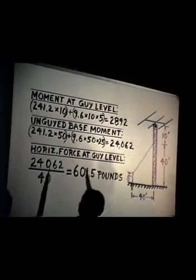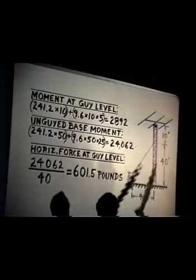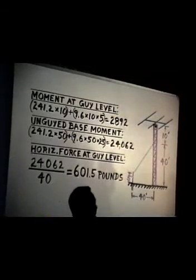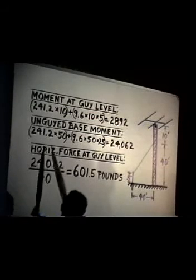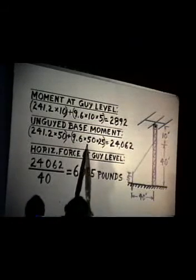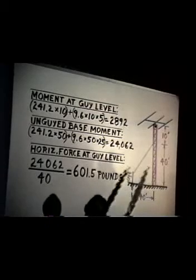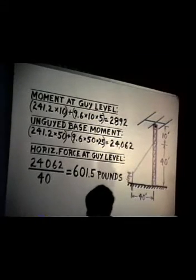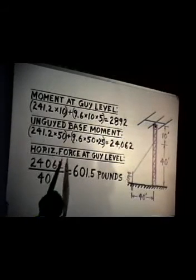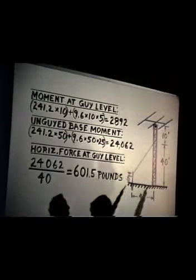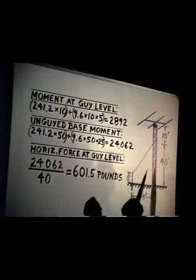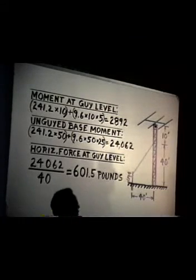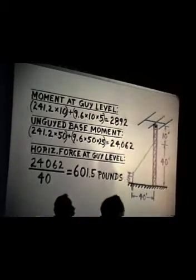Now, because it is a 50-foot high structure, the moment at the base if it were not guyed — just self-supporting in concrete — would be 241.2 times 50, plus 9.6 times 50 times 25 for the halfway-up distributed load, giving us 24,062 foot-pounds at the base. That is being resolved by the guys. So the unsupported moment at the base divided by 40 feet gives us 601.5 pounds of horizontal restraint at the guy level.